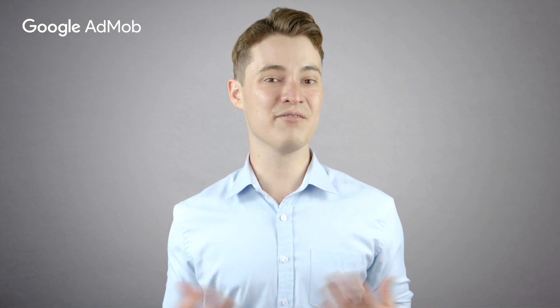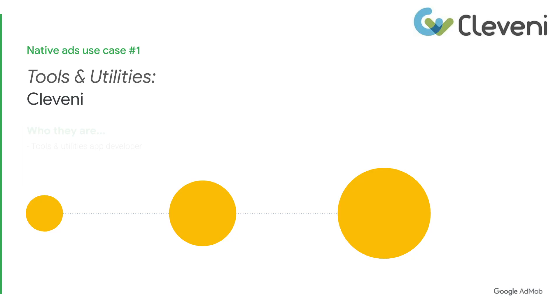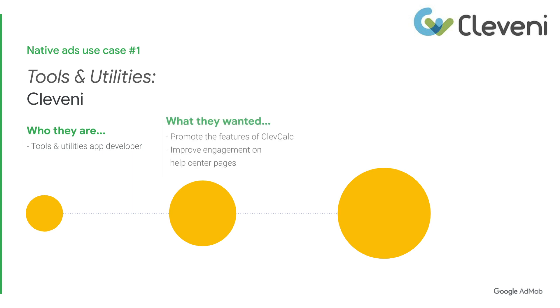Now let's take a look at fellow developers who have found success with native ads across three of our most popular verticals: tools and utilities, games, and entertainment. Our first case study is a tools and utilities app developer named Cleveni. Cleveni wanted to promote the features of their popular calculator app, Clevcalc, and also wanted to improve engagement on their Help Center pages.